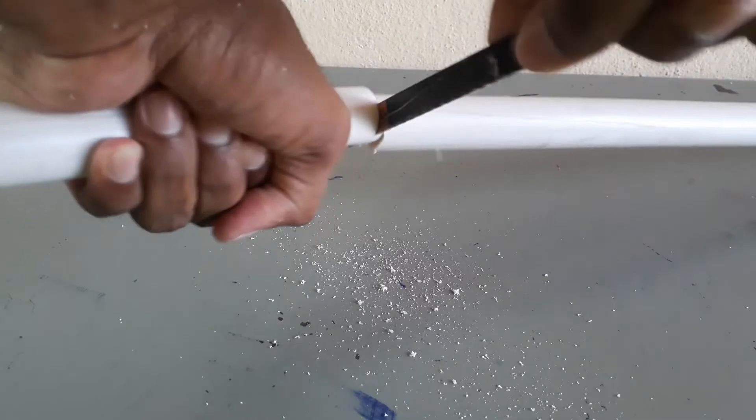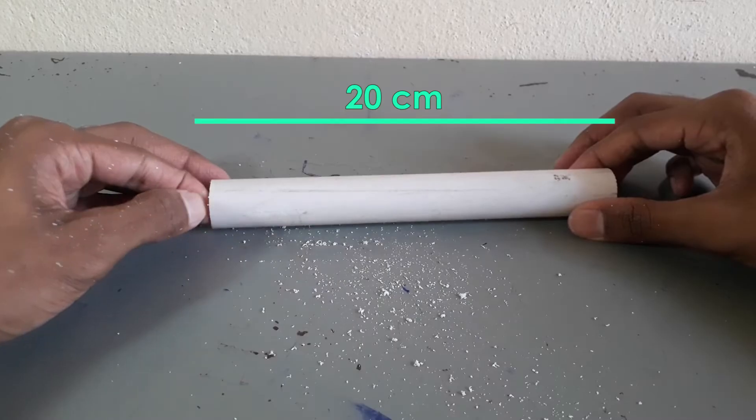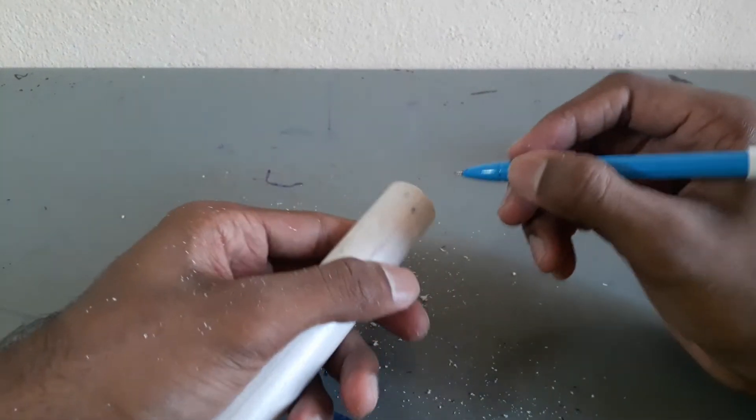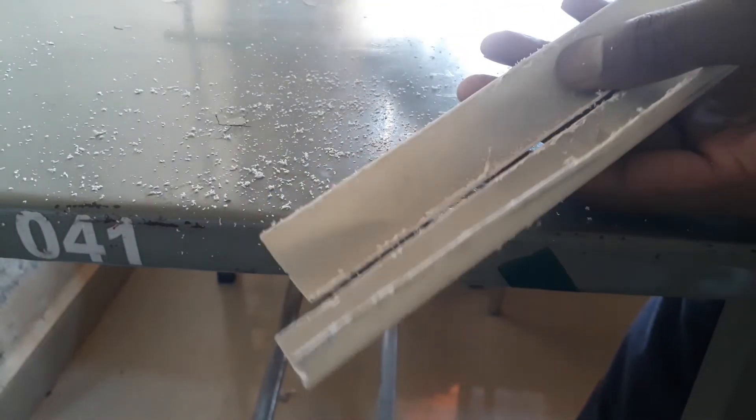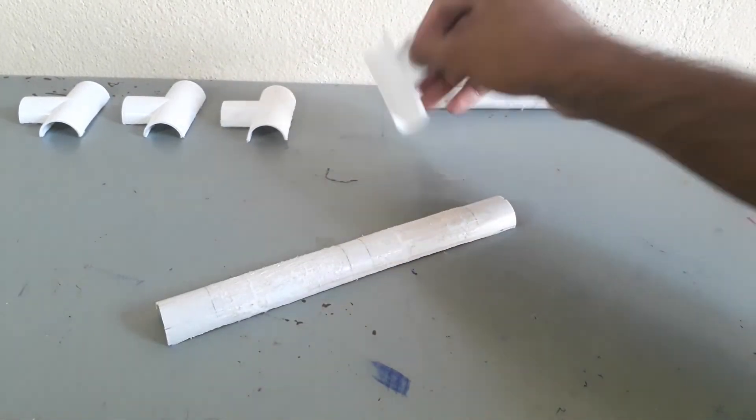Take the conduit pipe which is of diameter 1 inch and make it 20 centimeters long. Then split it in two. Now take the pieces and paste them tight as shown.